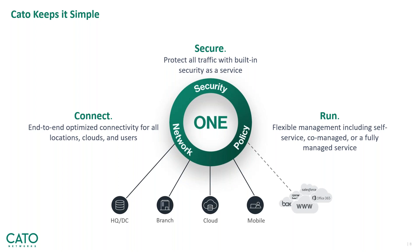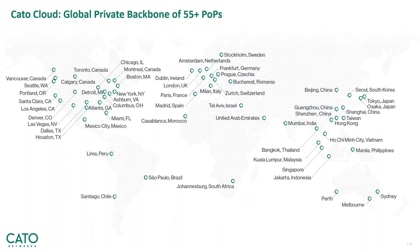Once we see all your traffic, we can provide an enterprise-grade security layer that protects all your edges equally. We offer a very flexible management model including self-service, co-managed, or fully managed. Unlike your MPLS circuits today — where changes require opening a ticket with the telco — with Cato you have full access to configure and make any changes yourself. Our cloud spans over 58 points of presence worldwide, continuing to grow at an average pace of three to four new POPs every calendar quarter. We build POPs based on customer demand, so if you need a POP in proximity to one of your branches, we'll accommodate that.